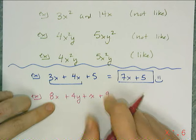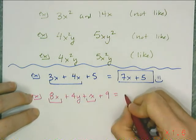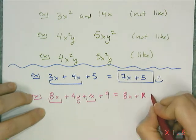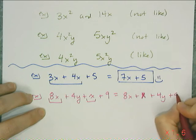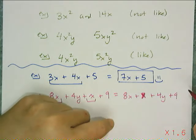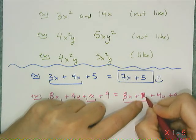And so what I want is I want to put the 8x with the x. And so I use the commutative property and I put them together so they're right next to each other. And then I put the other terms towards the end. Because I need variable terms in the front. And I like x's.